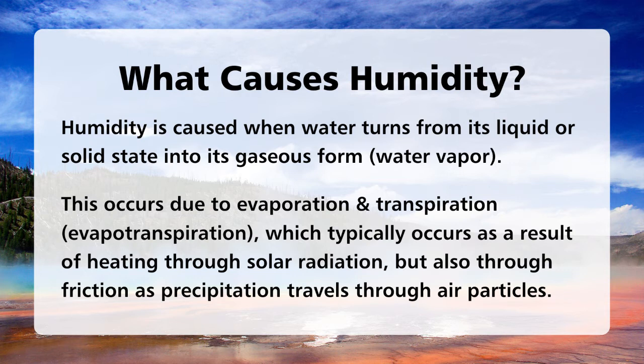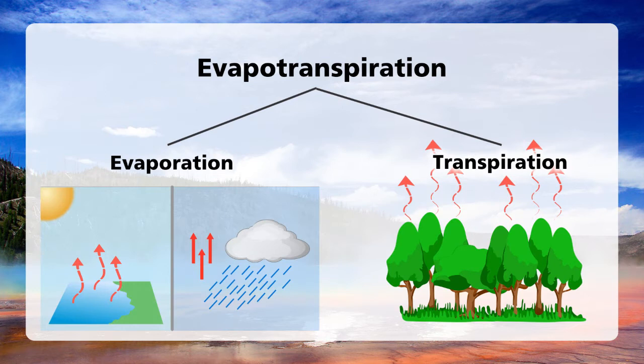Let's break this down. Evapotranspiration is the combined process which includes evaporation and transpiration. Evaporation is by far the biggest contributor to the formation of water vapor, and it occurs in two different ways. The most well-known way is through solar radiation — the sun heats a body of water, whether it's the ocean, a lake, or a little puddle, and that causes water to heat up and turn into water vapor. However, that is not the only way evaporation takes place and humidity forms.